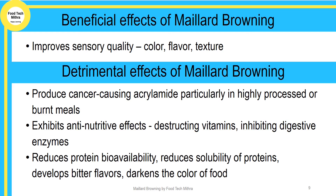The disadvantages of Maillard browning include the production of acrylamide — a cancer-causing agent found particularly in highly processed or burnt meals. Acrylamide is produced when glucose and the amino acid asparagine react together at high temperature, making it one of the end products of Maillard browning. Other disadvantages include anti-nutritive effects such as destruction of vitamins, inhibition of digestive enzymes, reduced bioavailability of proteins, development of bitter flavors, and unacceptable darkening of the food product.